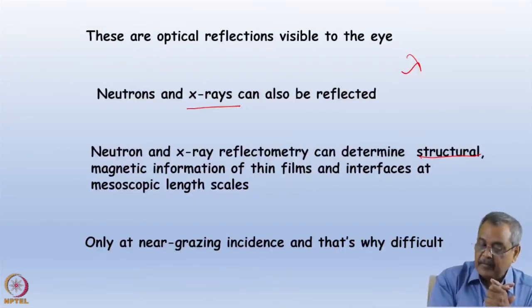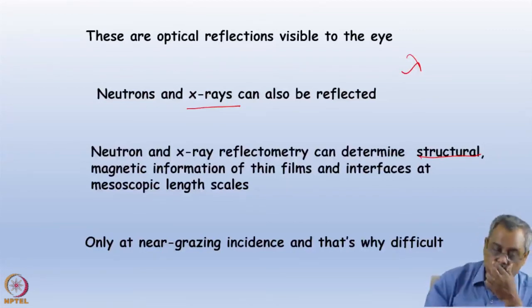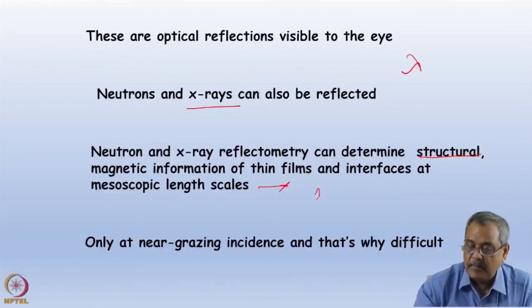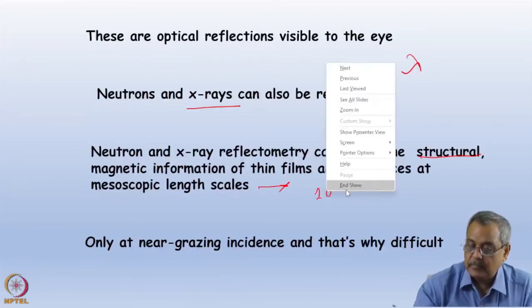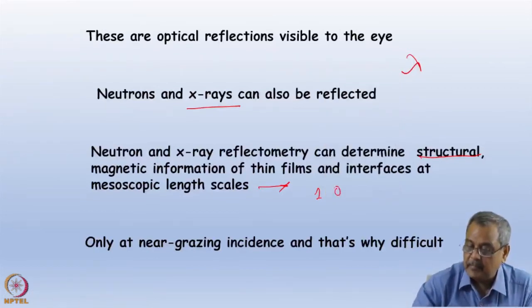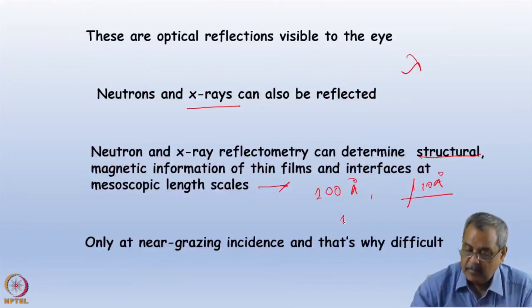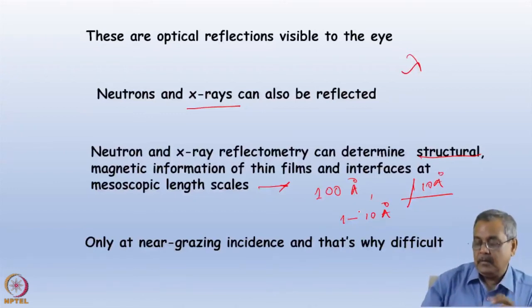I will talk about films which may be 100 Å thick, magnetic moment per 10 Å thickness, and roughness may be 1 to 10 Å. These are quantifying parameters at mesoscopic length scales. Both these experiments are at near-grazing incidence, and that's why they are difficult.